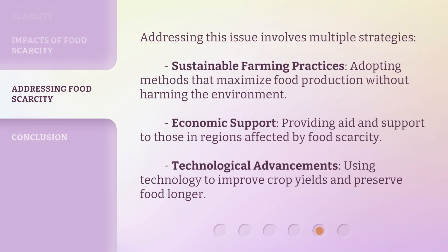Addressing this issue involves multiple strategies. Sustainable farming practices: adopting methods that maximize food production without harming the environment. Economic support: providing aid and support to those in regions affected by food scarcity. Technological advancements: using technology to improve crop yields and preserve food longer.